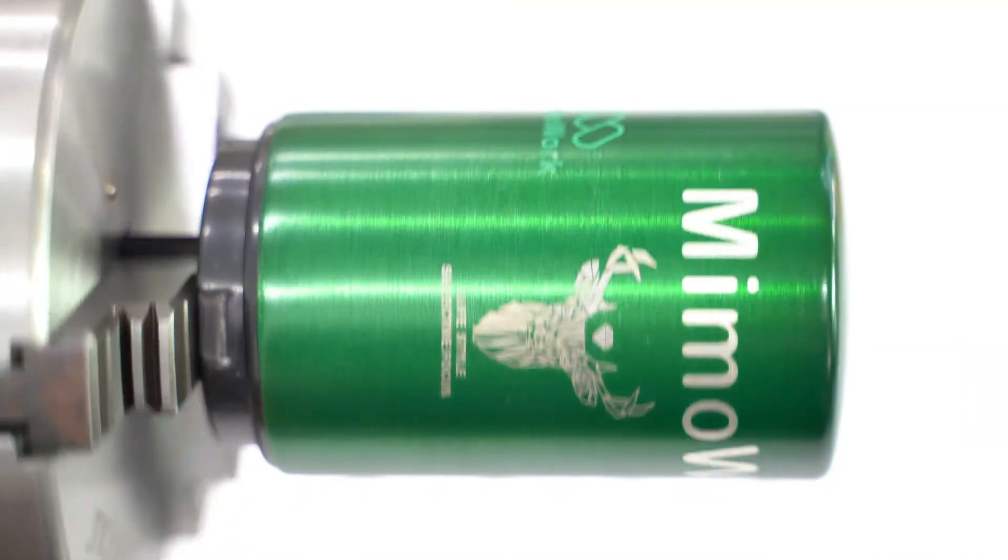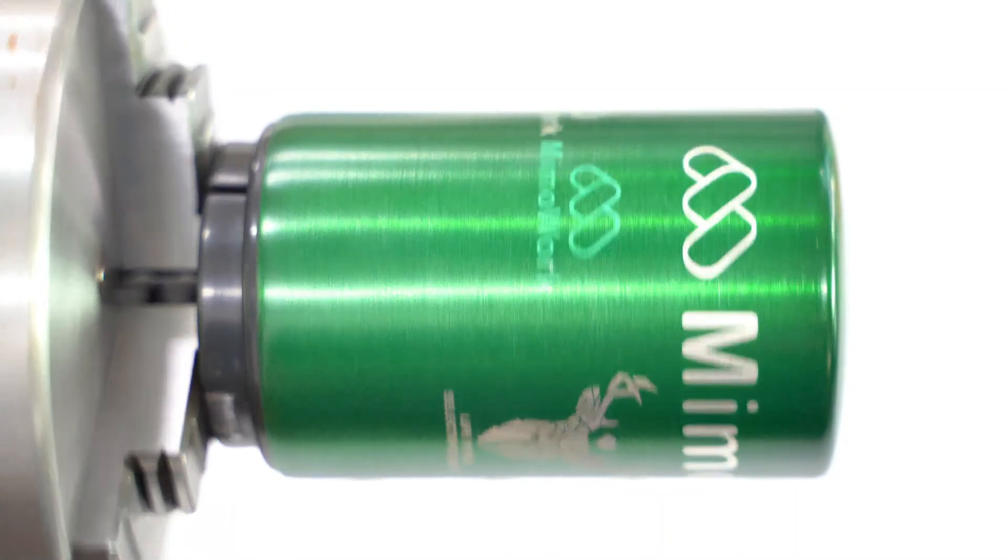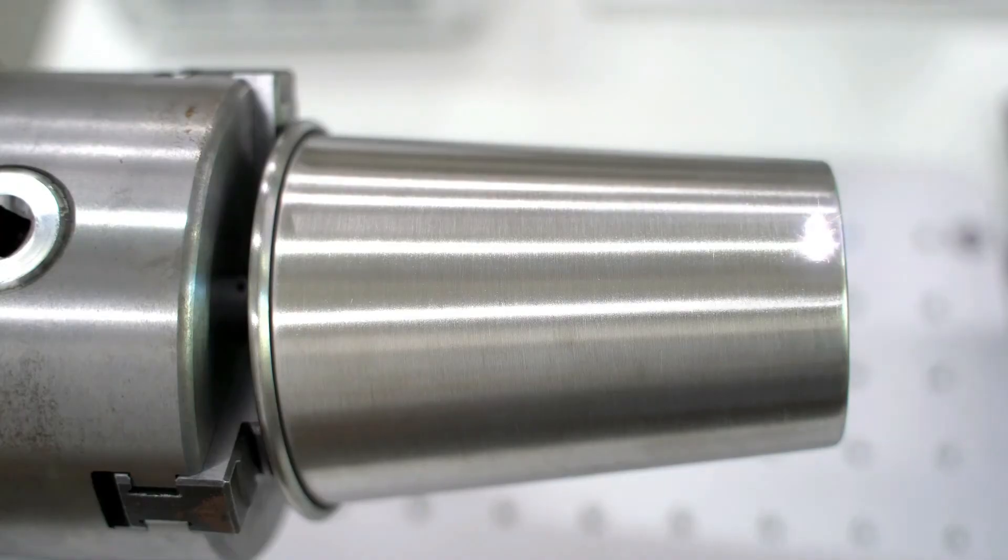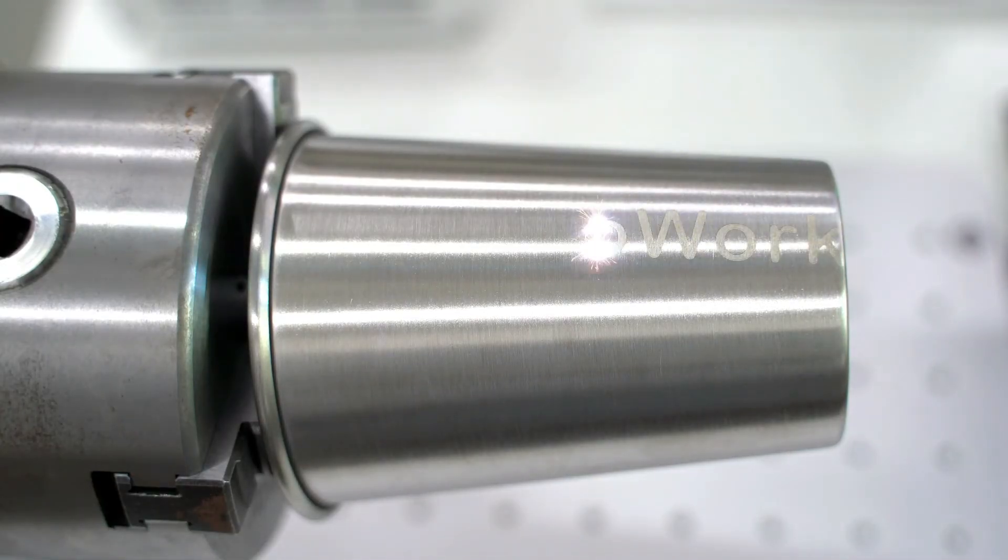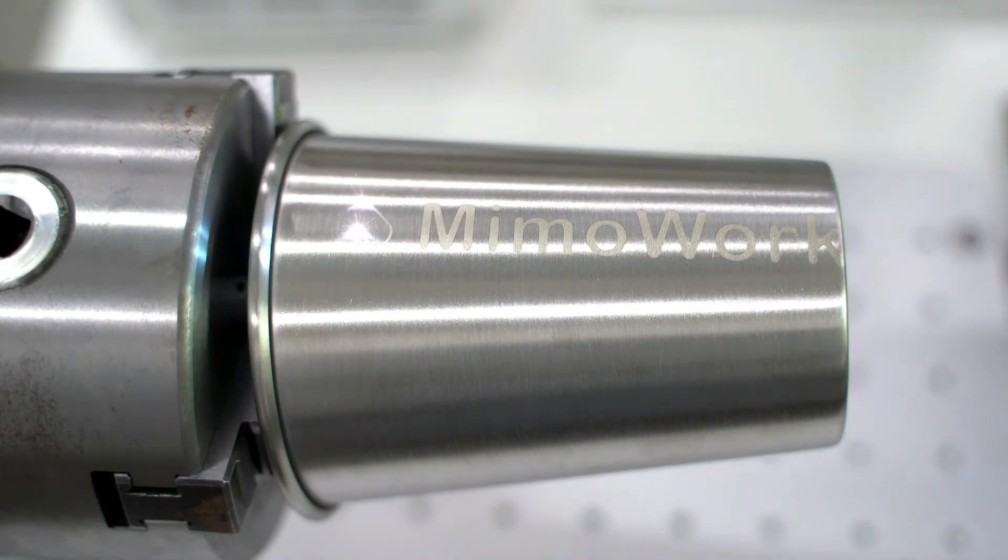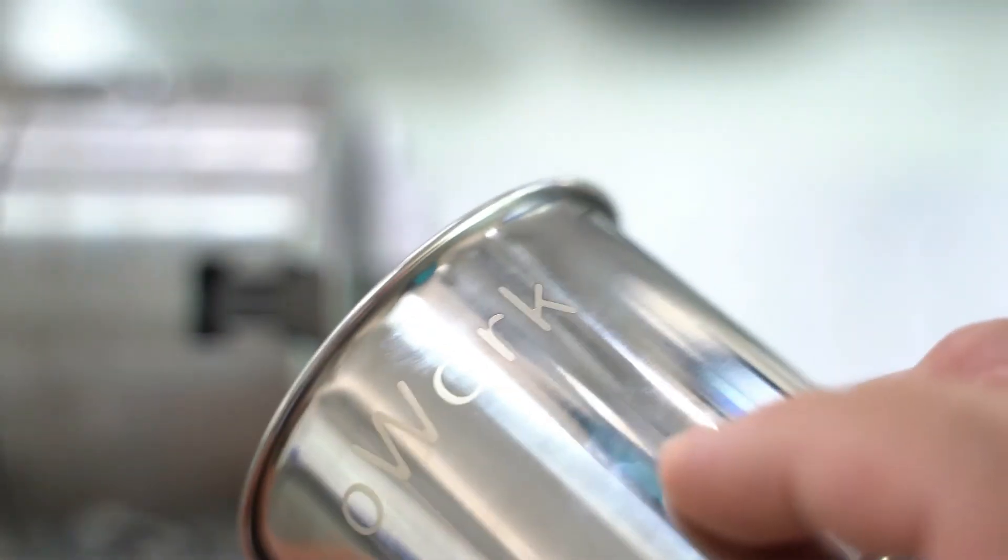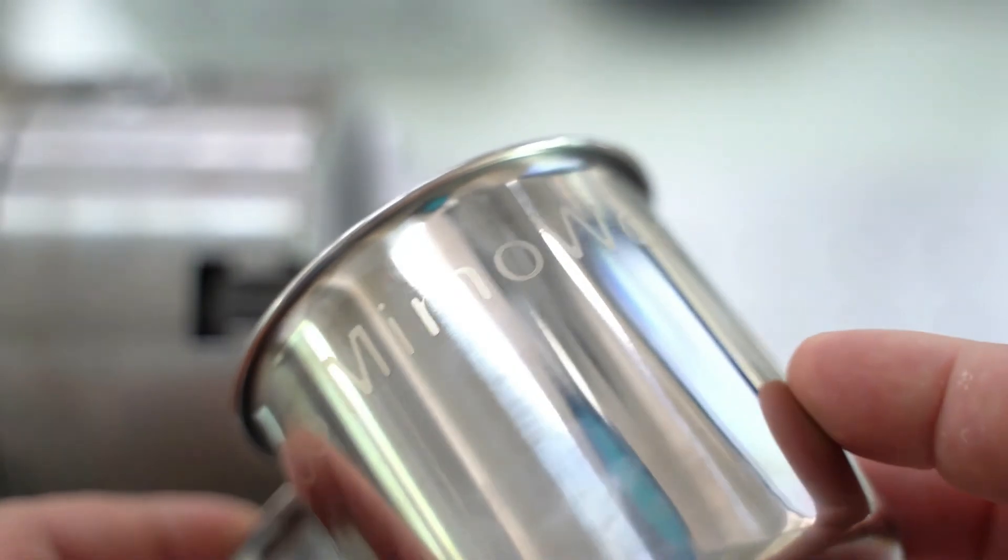Or apply serial numbers, production information, and logos on big metal workpieces like a flange. Besides metal, many other materials can be engraved with a fiber laser marking machine. Let's take a close look at the actual fiber marking result.